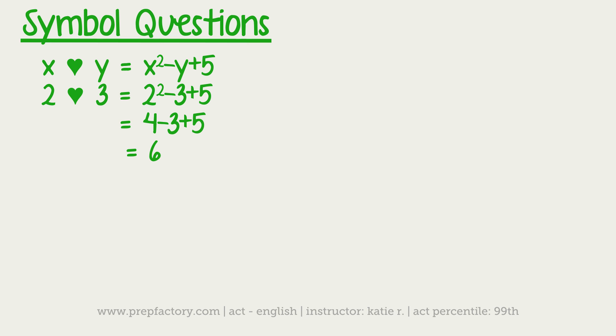But how about when they make it a little bit more complicated? Here's a more complicated question: 3 heart 1 heart 2 heart 10. This looks really complicated, but again it's just following directions. I'm just going to start with the left part of this, 3 heart 1, and ignore everything else for a minute.